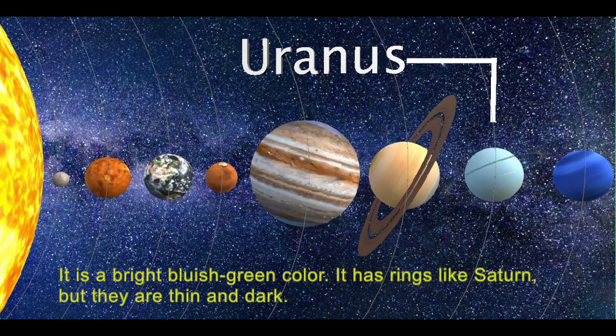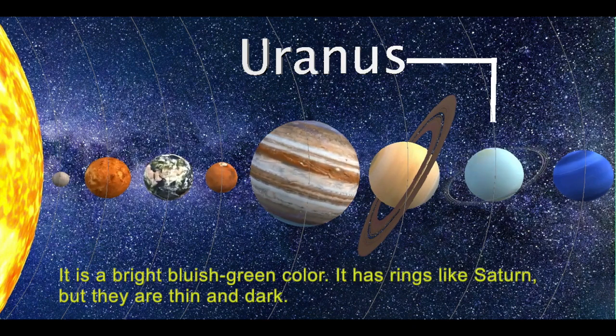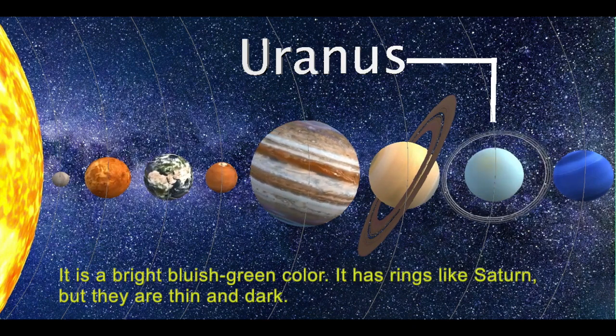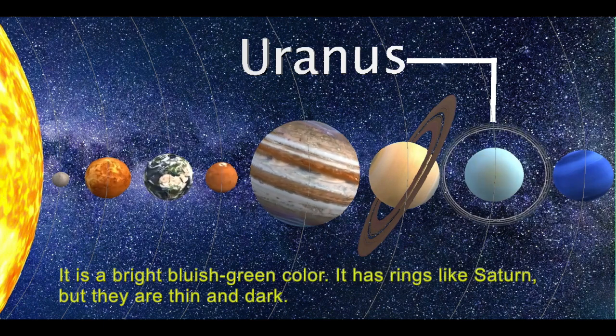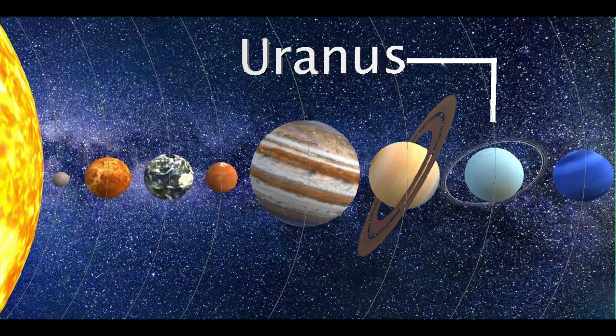It is a bright bluish green color. It has rings like Saturn but they are thin and dark.